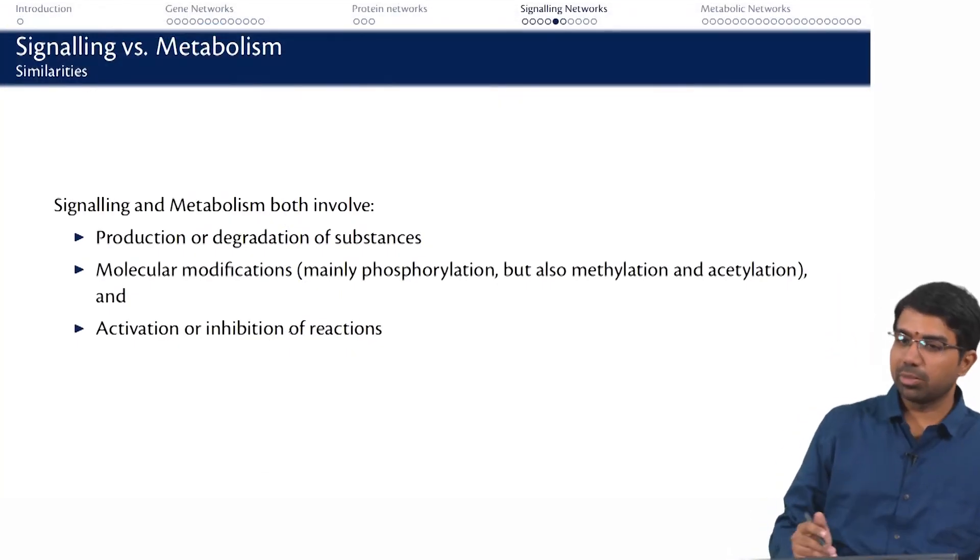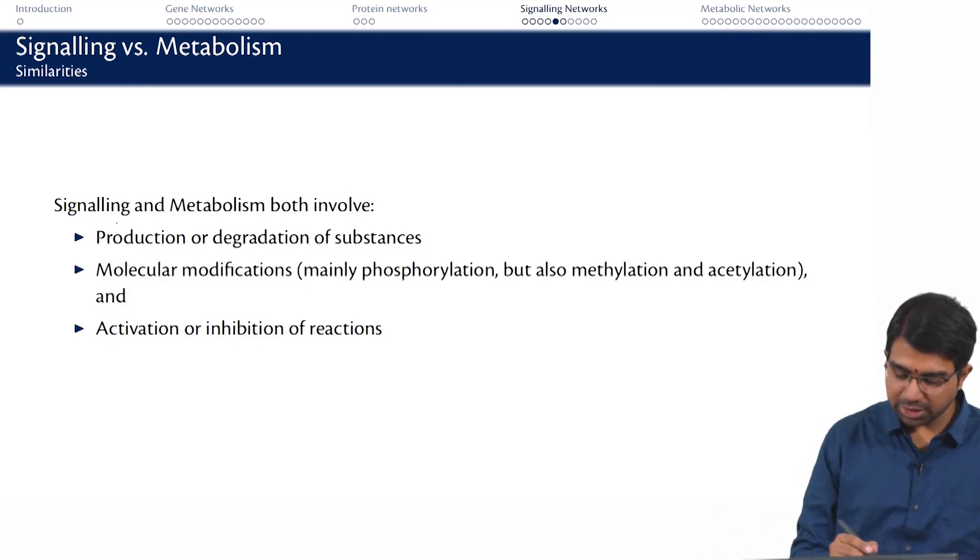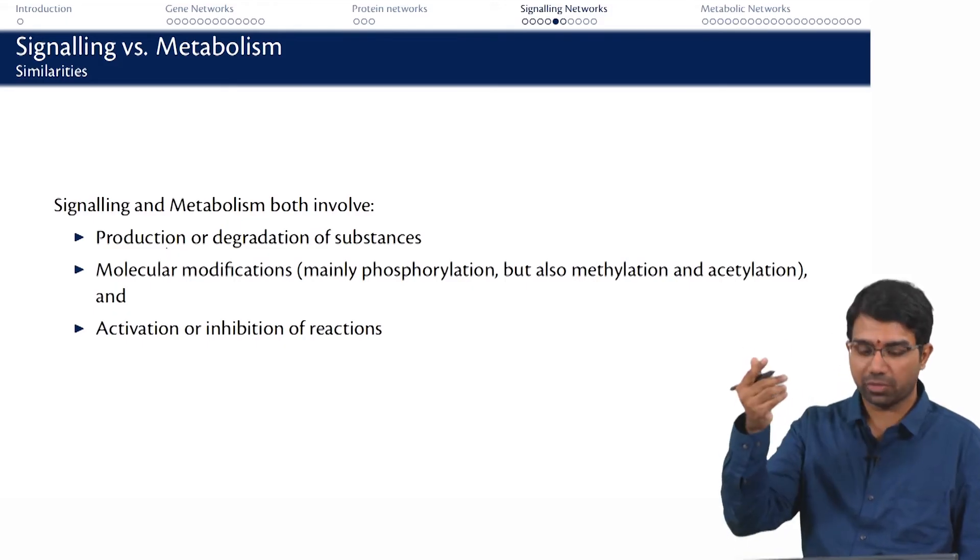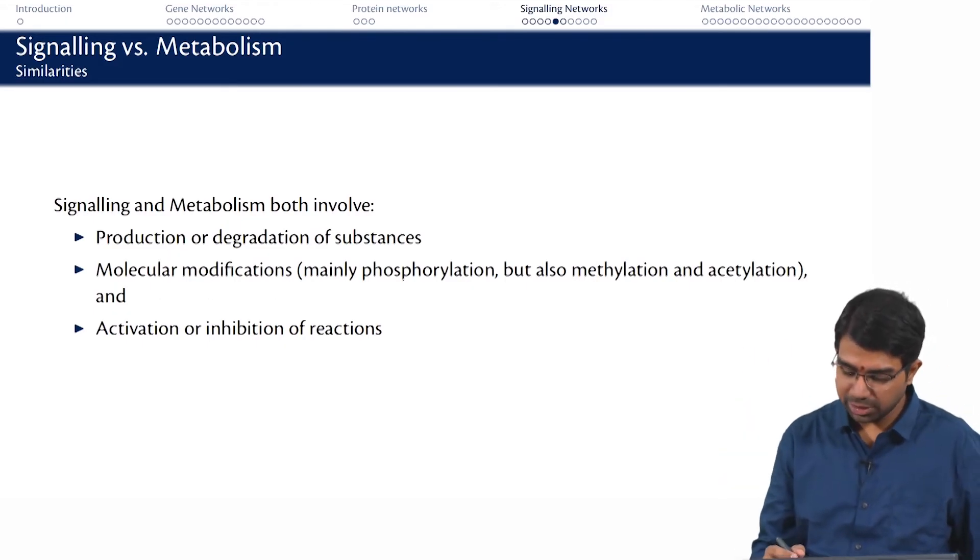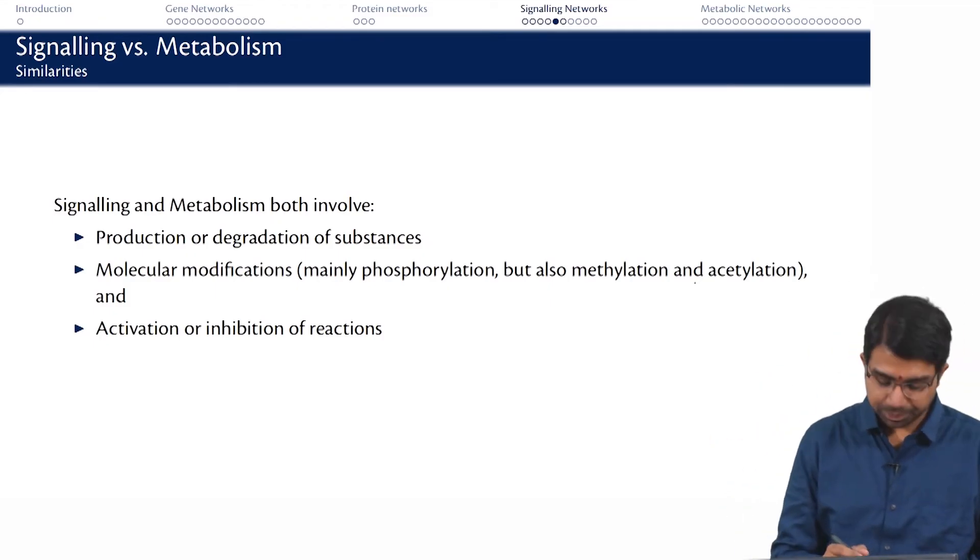Let us look at signaling and metabolism. Both signaling and metabolism involve production or degradation of substances. In one case it is small molecules, in the other case it could be small molecules again in signaling, but often it is larger molecules or proteins themselves which are turned off and turned on. They may not be degraded but they may be just switched off. And then lots of molecular modifications - here in signaling it is mostly phosphorylation, methylation and acetylation. In metabolism we have many more complex types of modification. You could have activation and inhibition of various reactions. Same thing that holds for signaling as well.